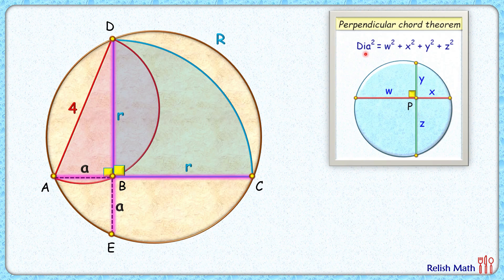Now proceeding further, diameter squared, that's 2R squared, equals w squared plus x squared plus y squared plus z squared, that's R squared plus a squared plus R squared plus a squared. To find the value of R squared plus a squared, we'll use this green triangle. Applying Pythagoras theorem in it, we get R squared plus a squared is 4 squared. So the RHS is 2 times 4 squared.